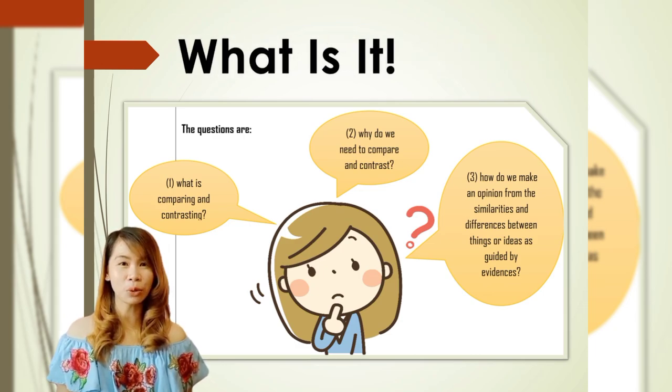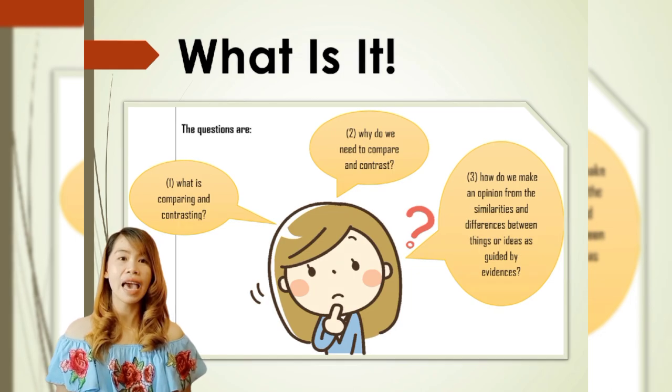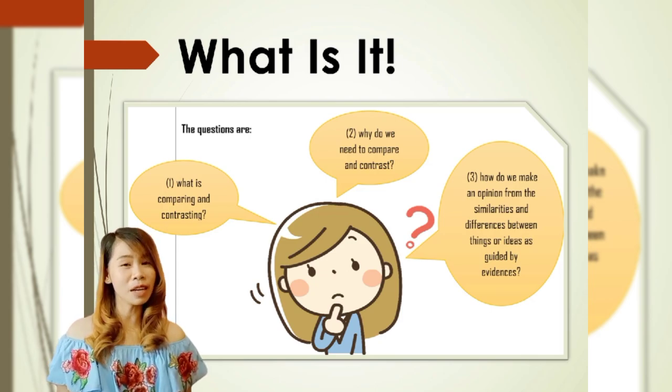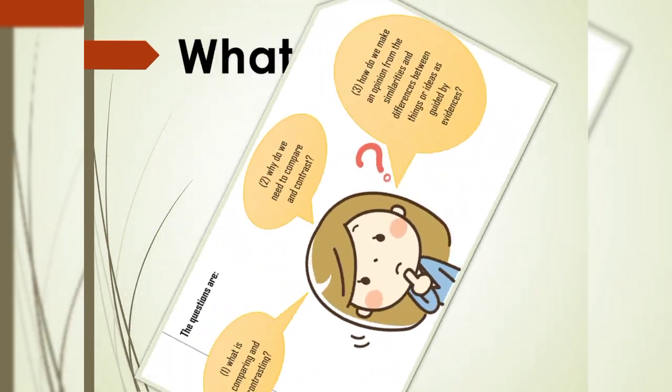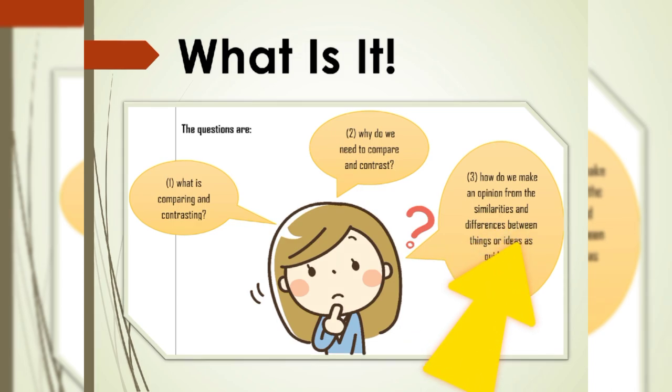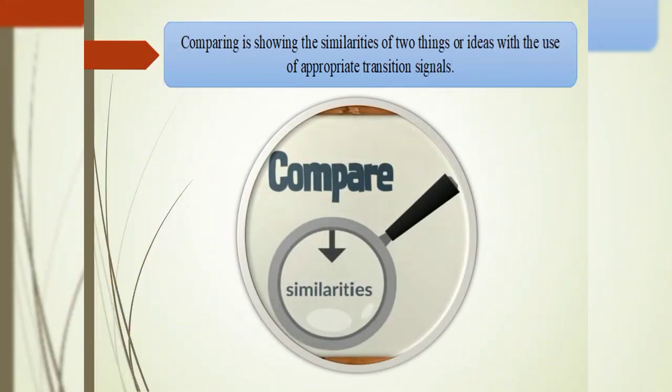What is it? In the previous part of the module, you have observed that the concept map and the images are used in the previous activity in order to identify and present what are the similarities and differences of different multi-modal text. To do that, comparing and contrasting is necessary to understand the similarities and differences. But the questions are: What is comparing and contrasting? Why do we need to compare and contrast? How do we make an opinion from the similarities and differences between things or ideas as guided by evidences? Let's begin with the first question: What is comparing and contrasting?